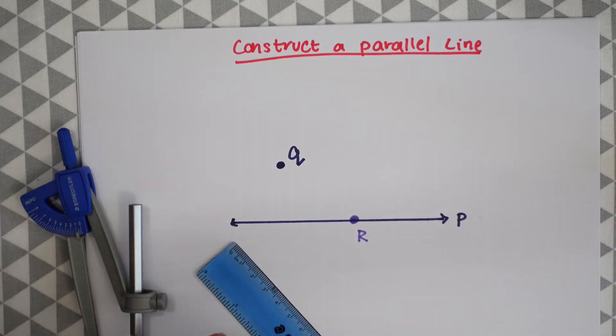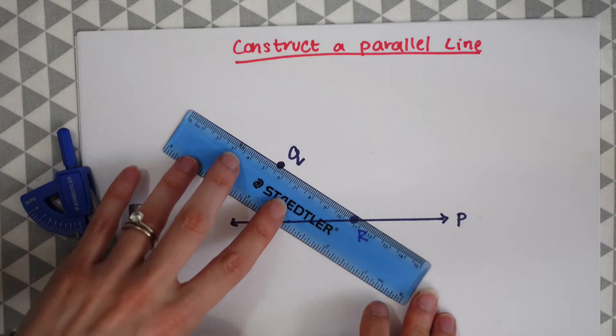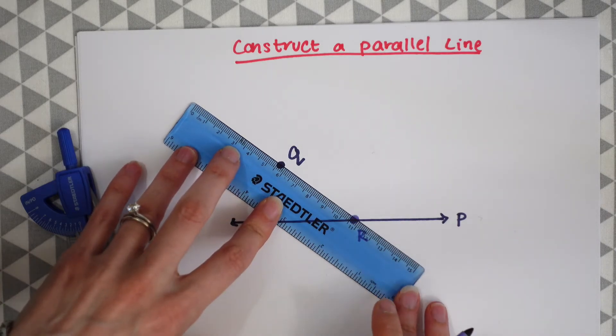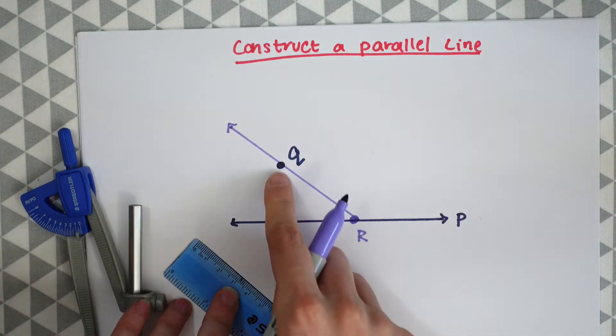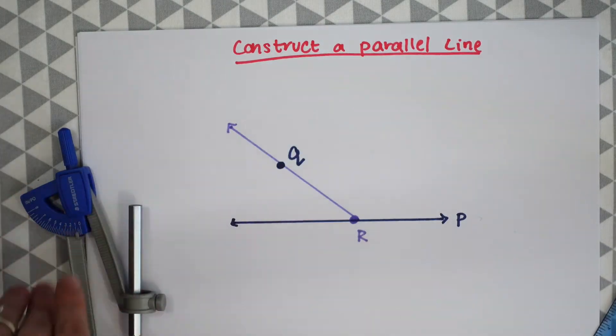Next we're going to draw a line from the point we made to the already given point, point Q. Let's draw a line and make sure this is an extended line so that goes past point Q. We're just going to make this nice long line.